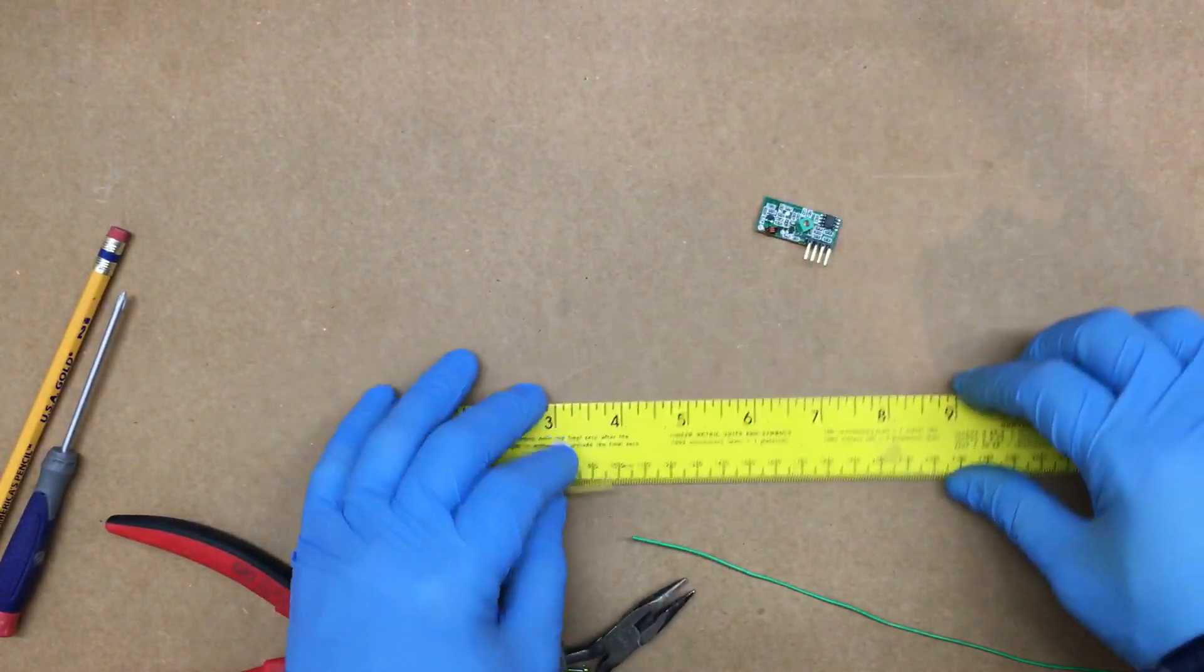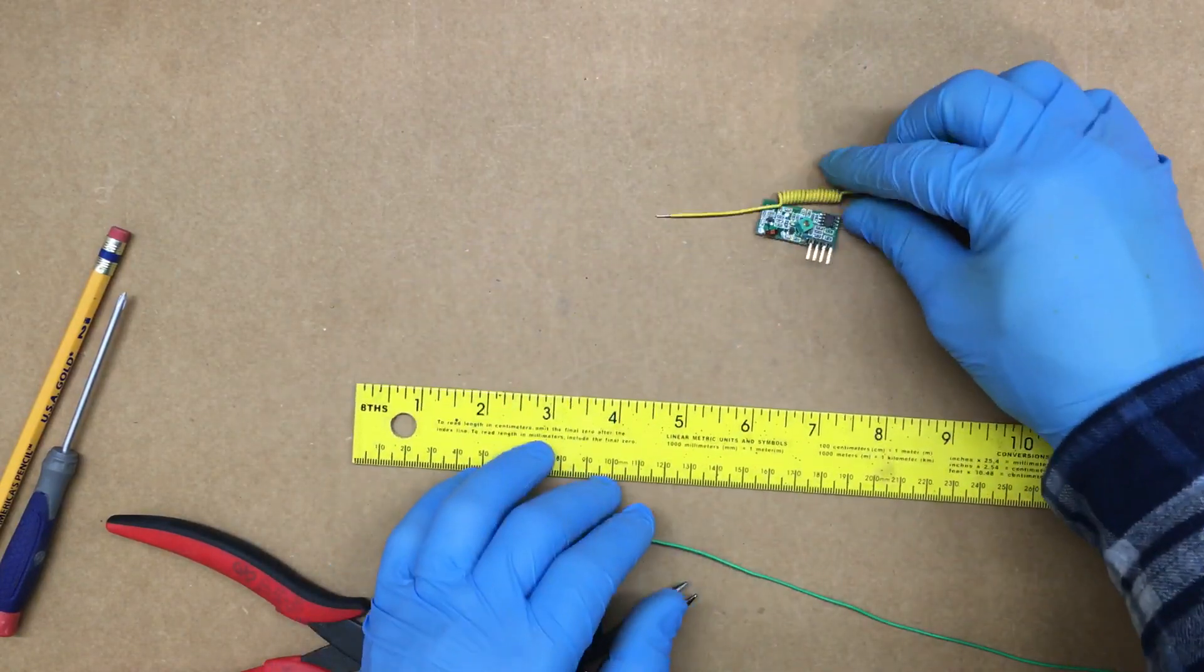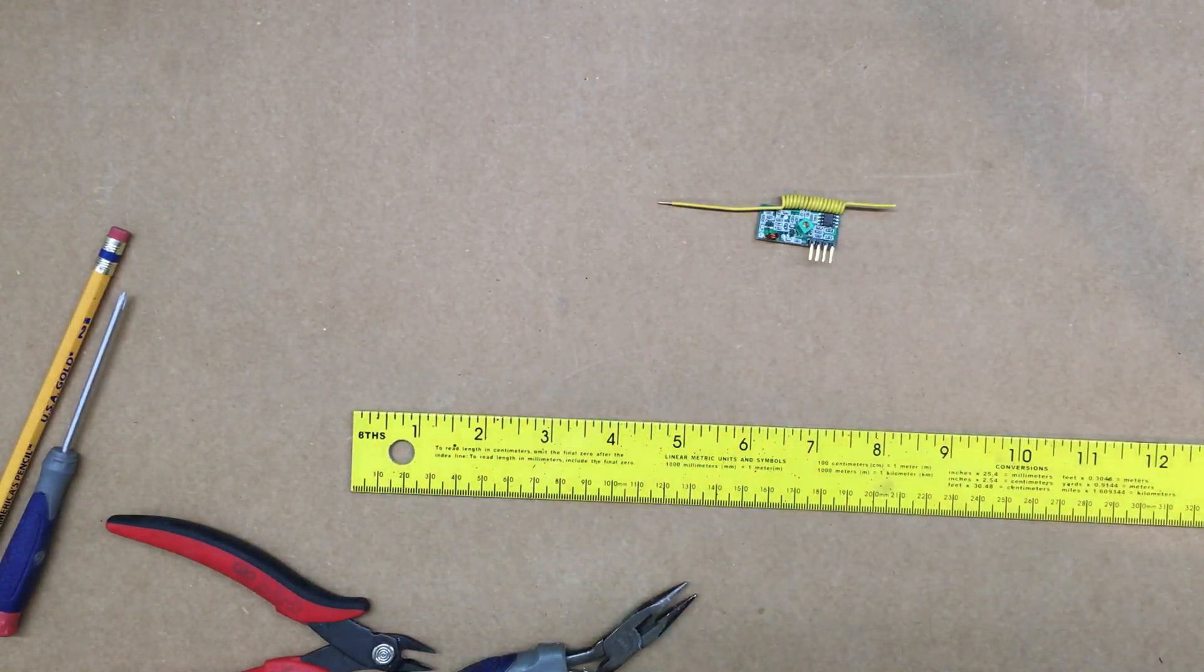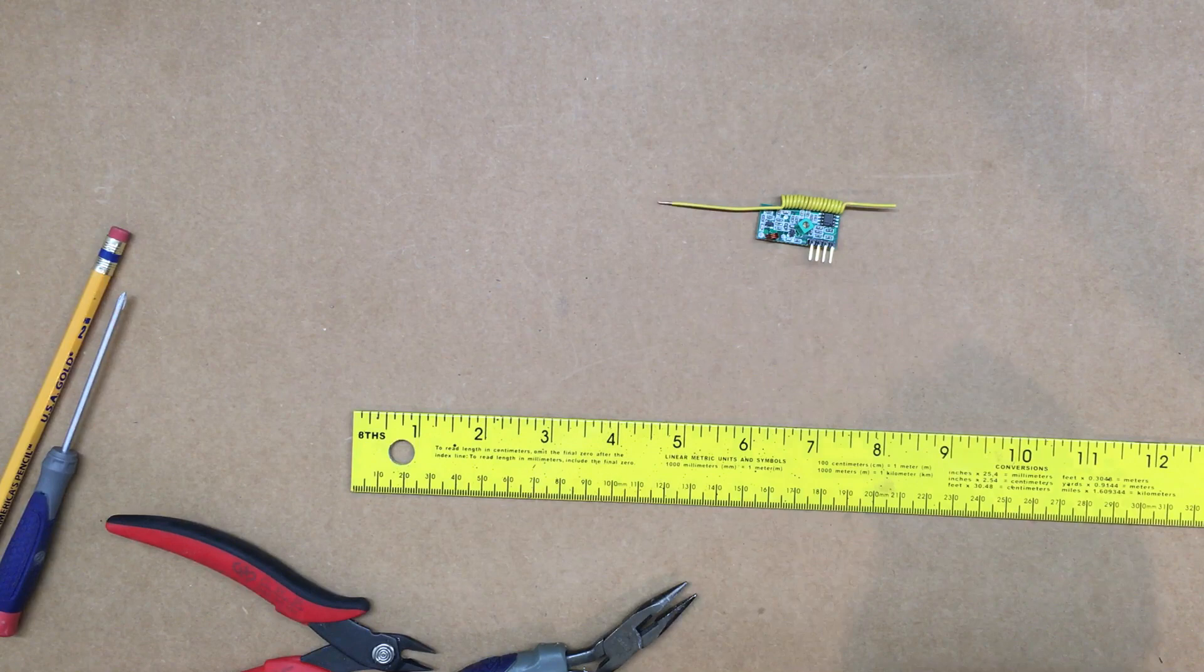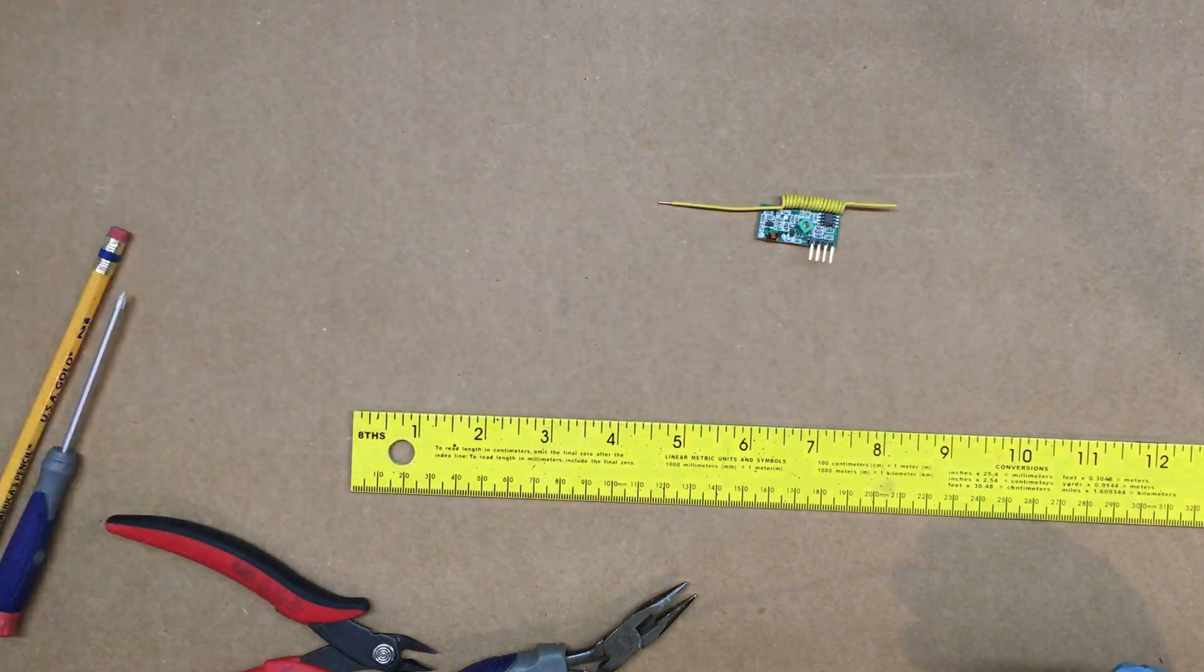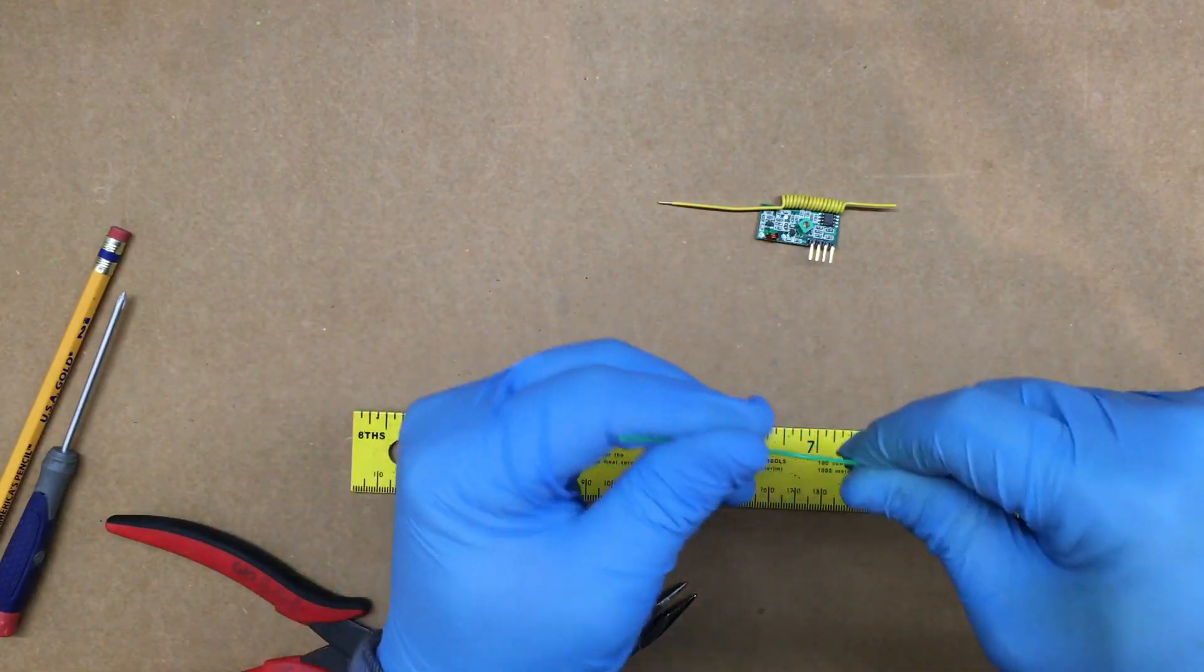That's what it will look like when we're done. I'm using 18 gauge solid copper wire from some thermostat wire. This stuff's pretty playful and pretty strong, so we need to first measure out 53 millimeters.